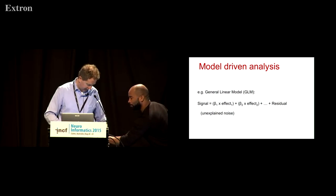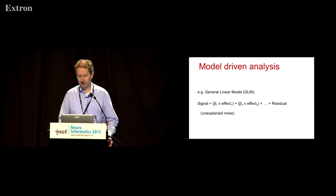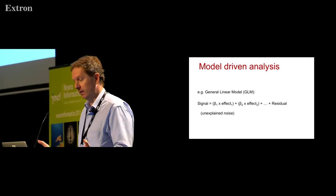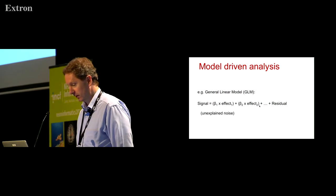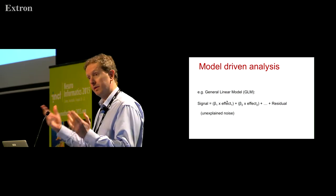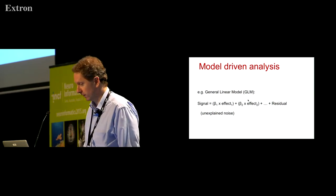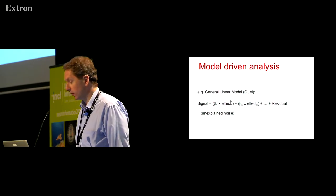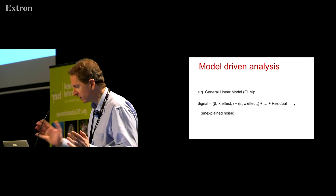The modelling I'm talking about is not computational neuroscience modelling — it's statistical modelling of the sort that JB was talking about. In the simplest form, you've got a signal and you try to model it with a general linear model. You have a priori effects of interest — what the subject is doing — and other effects that might be confounds such as motion or other artefact. You fit this model to the measured signal and compare the size of the fitted coefficients with the residual or unexplained noise.